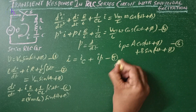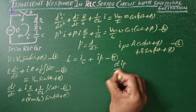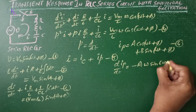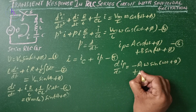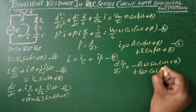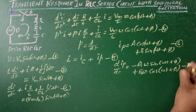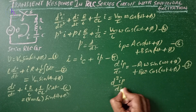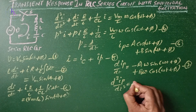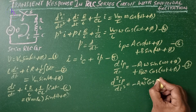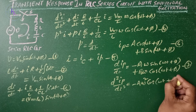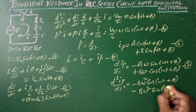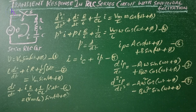Differentiating ip gives: dip/dt = −Aω·sin(ωt + φ) + Bω·cos(ωt + φ). Differentiating again gives: d²ip/dt² = −Aω²·cos(ωt + φ) − Bω²·sin(ωt + φ).